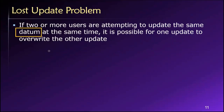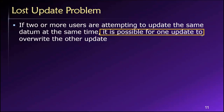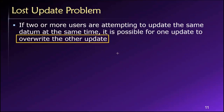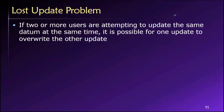If two or more users are attempting to update the same value in the database at the same time, it is certainly possible for one update to overwrite the other, yielding a final result that is inconsistent with what we'd expect based on reasonable mathematics or accounting. Our expectations won't match what actually exists in the database, because in a lost update problem, one user's update is overwritten by the other's.